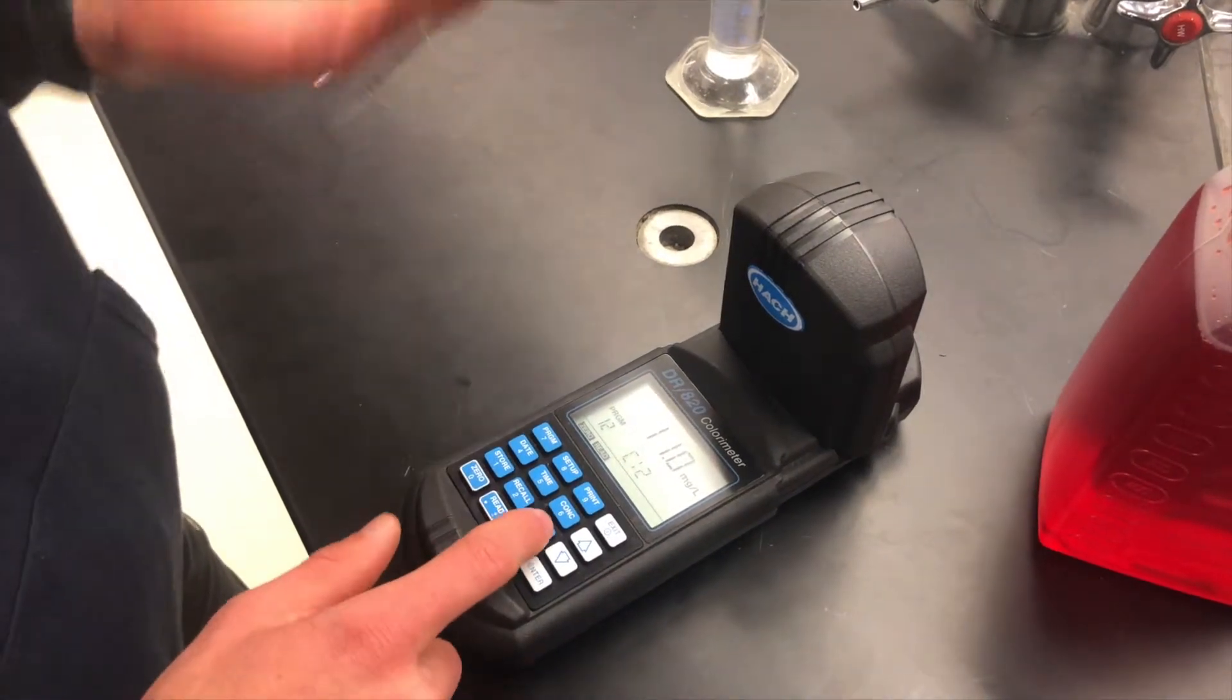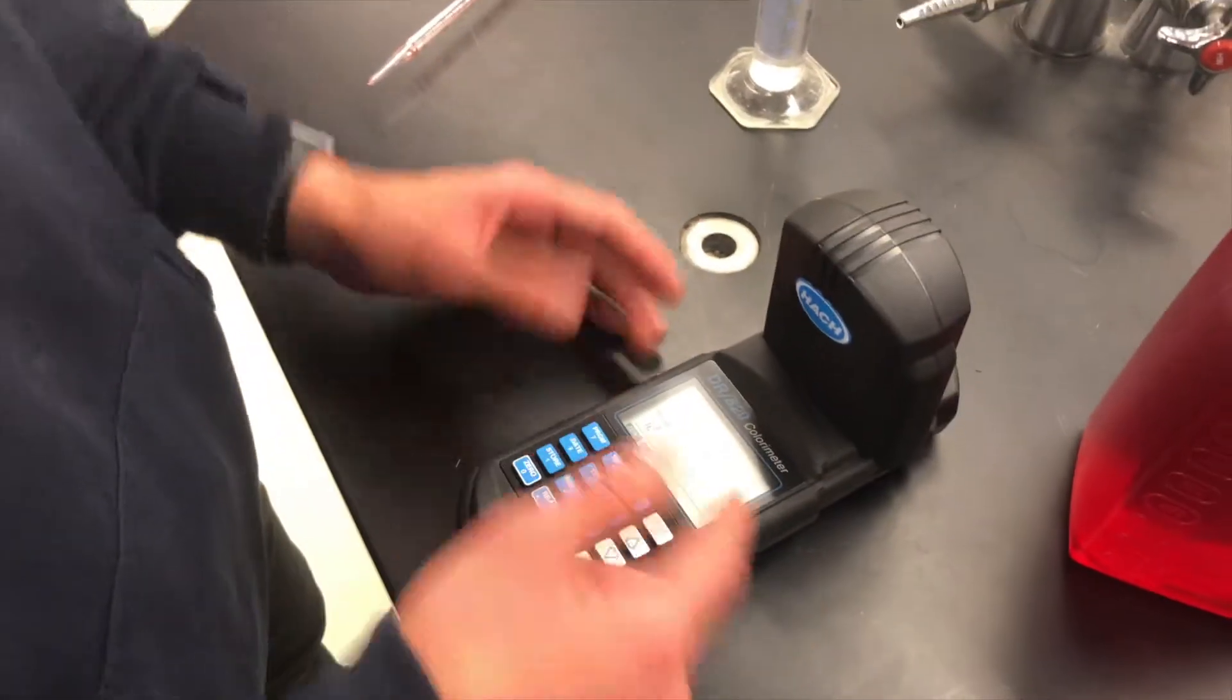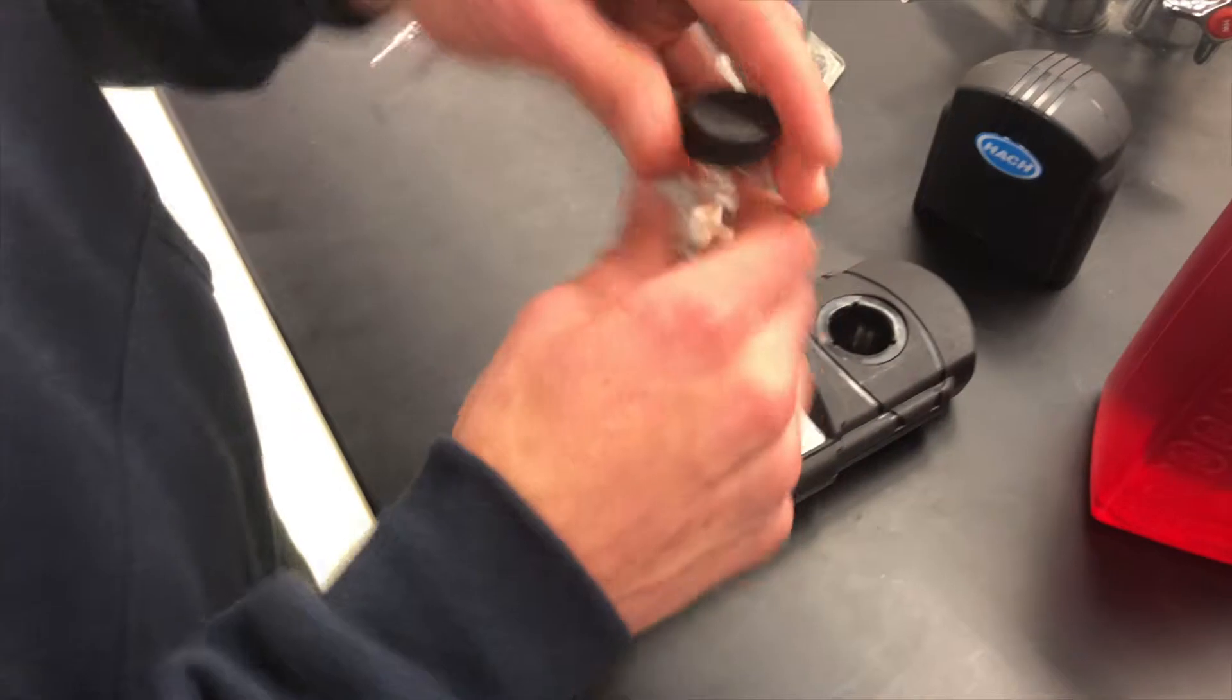This is milligrams per liter, which we don't want. So we're going to switch it to absorbance. Oh, no! Since it's over two, it means it's not a good reading because the Hatch Meter can't read over two absorbance. So we're going to take this out and dump it because it's pointless.